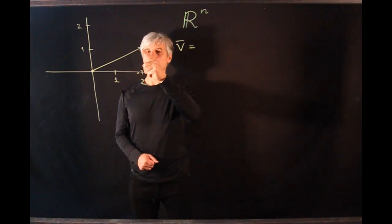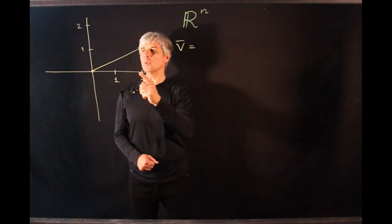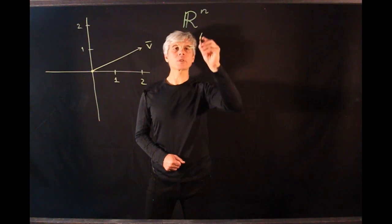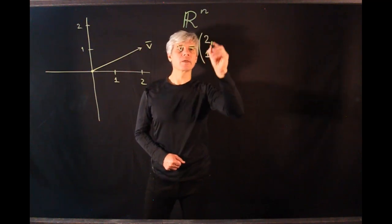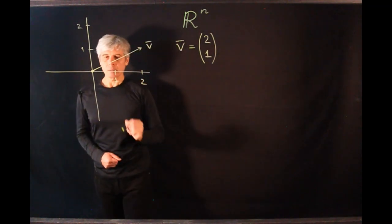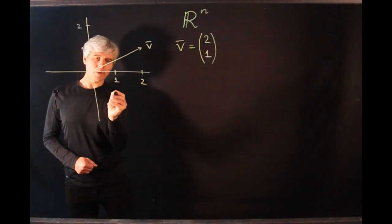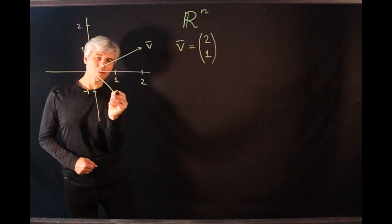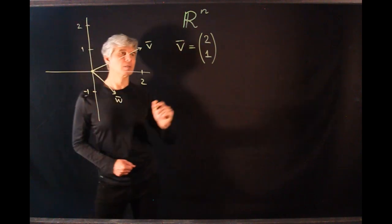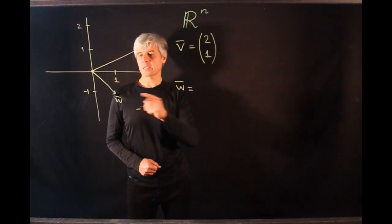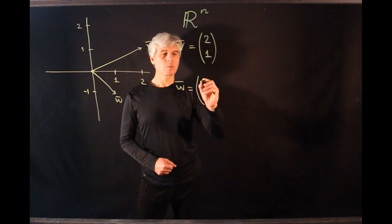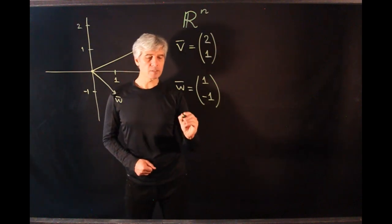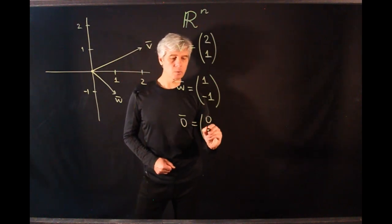So for example, this vector has x coordinate of 2 and y coordinate of 1. We're going to write coordinates as columns, so we write 2, 1. If we draw another vector, say here is minus 1, we can draw a vector like this. Vector w has coordinates 1 and negative 1. The zero vector will have coordinates 0, 0.